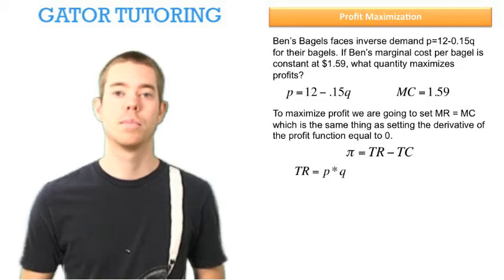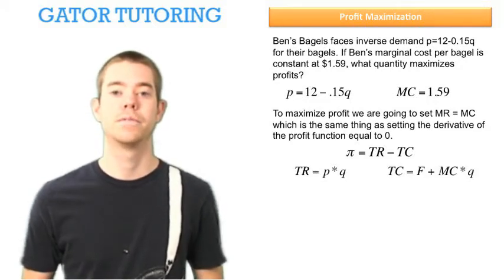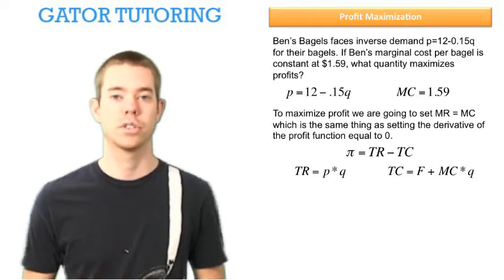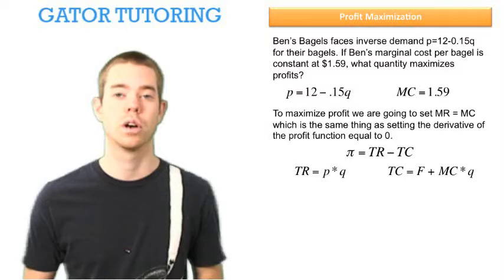Total revenue is price times quantity, and total cost is fixed cost plus marginal cost times quantity. In this question, they don't say anything about fixed cost, so we're just going to be worried about the marginal cost.